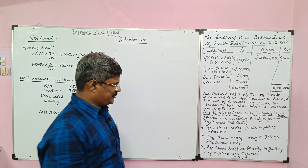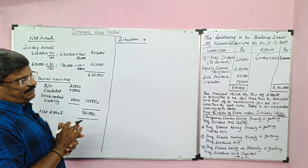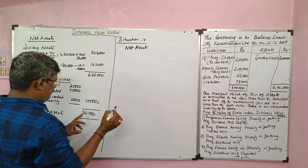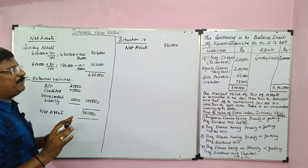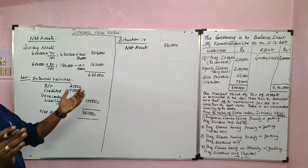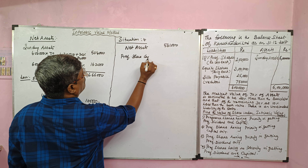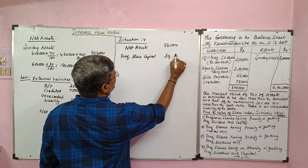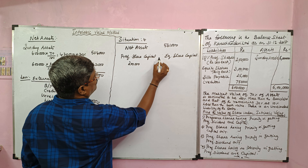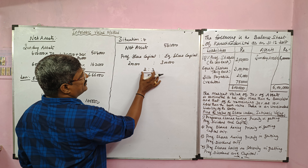Situation 4: preference shares having no priority in getting preference dividend and capital. So no priority in getting preference dividend or preference share capital. Take net assets already calculated: 5,61,000. We need not make payment for preference dividend or preference share capital separately. Equity shares and preference shares are considered to be the same. We divide total net assets in the ratio of preference share capital to equity share capital: 2 lakh to 3 lakh, so ratio is 2 is to 3.